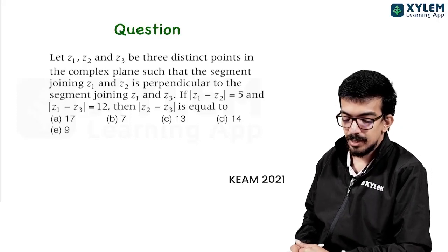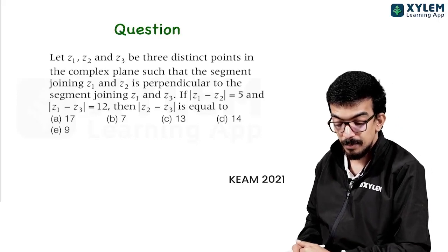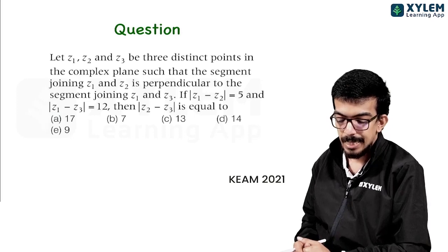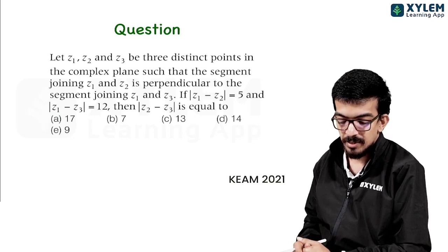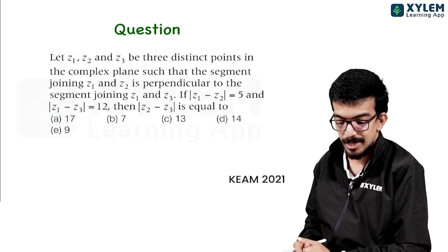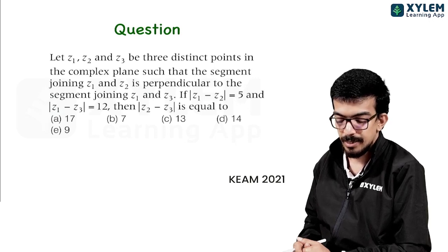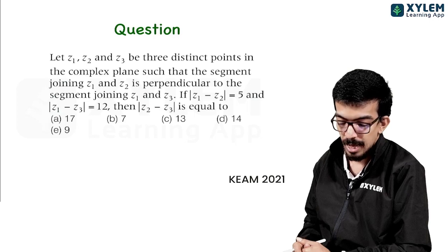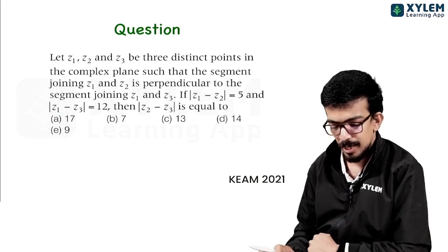Next question: let Z1, Z2, Z3 be 3 distinct points in the complex plane such that the segment joining Z1 and Z2 is perpendicular to the segment joining Z1 and Z3. Modulus of Z1 minus Z2 is 5 and modulus of Z1 minus Z3 is 12. Then modulus of Z2 minus Z3 is equal to?